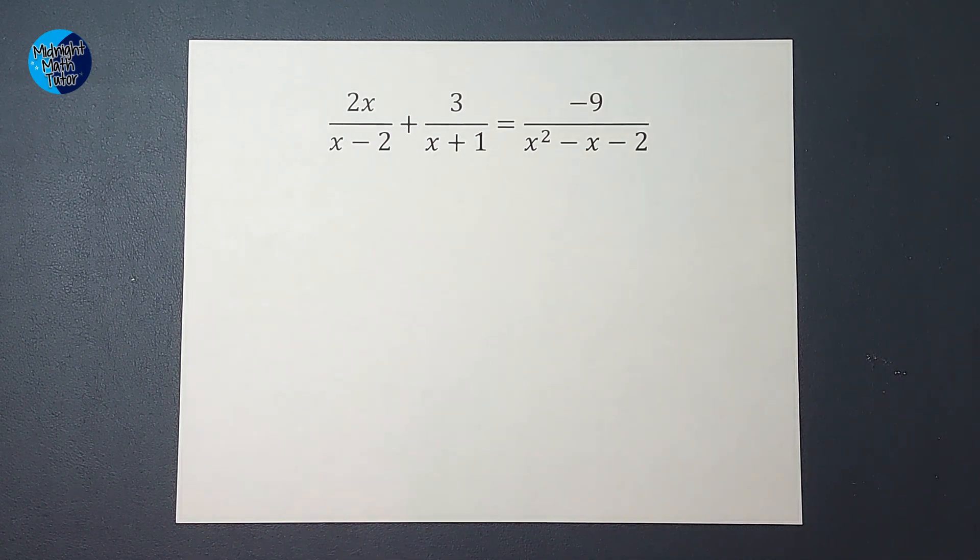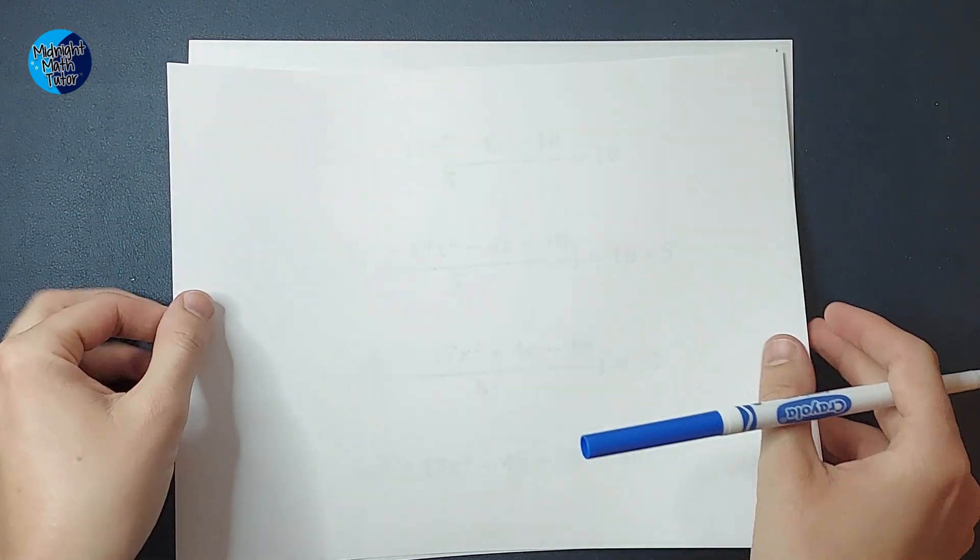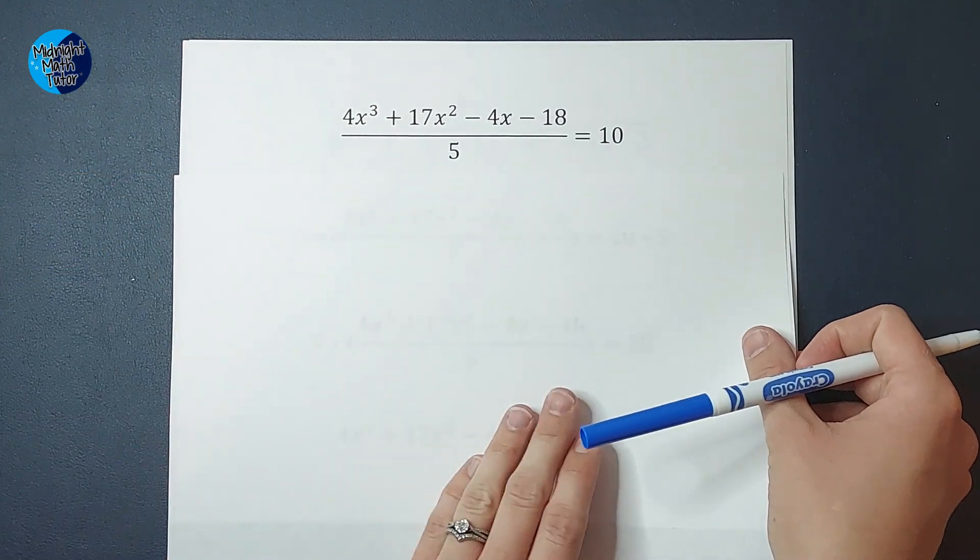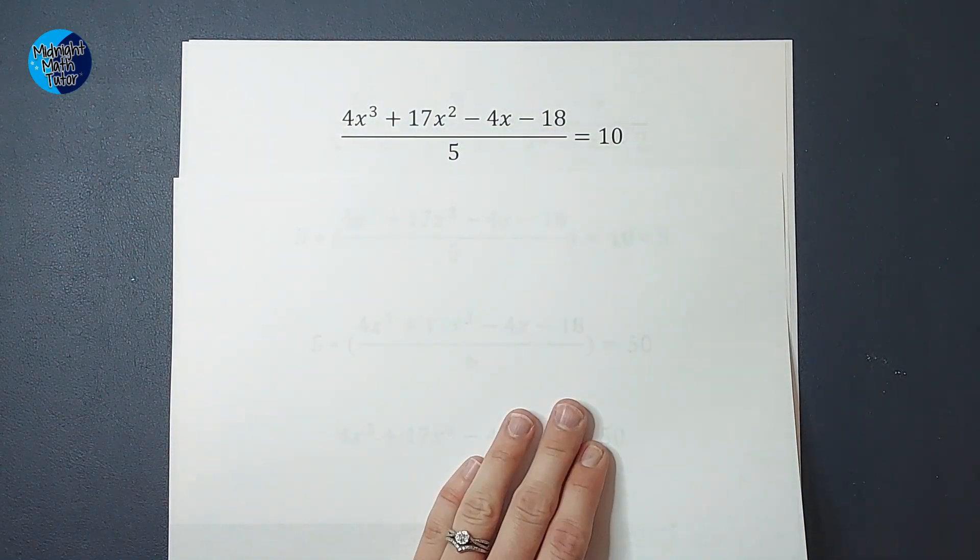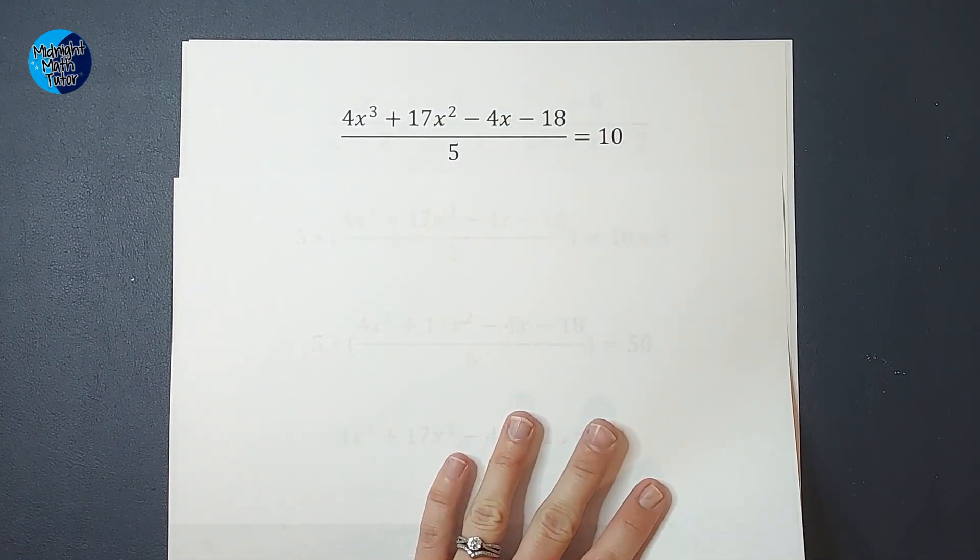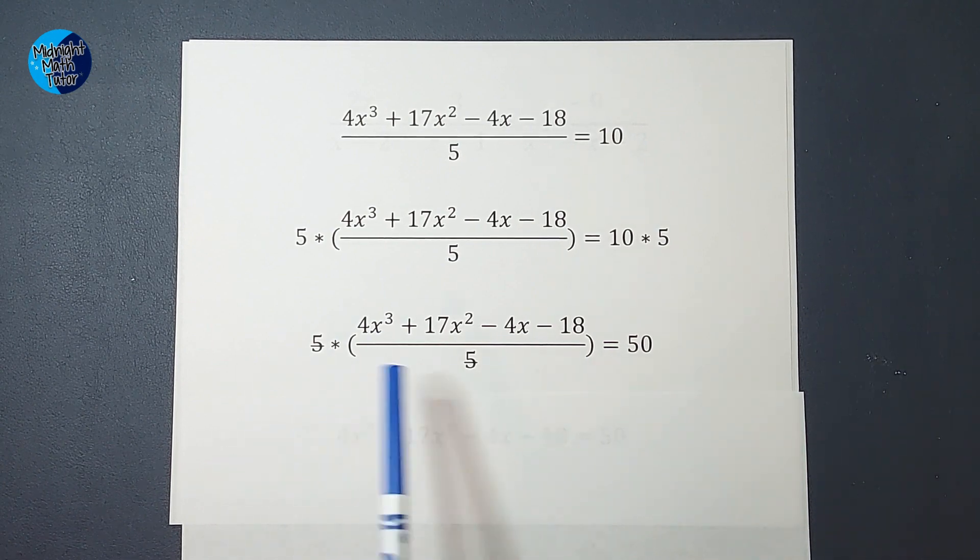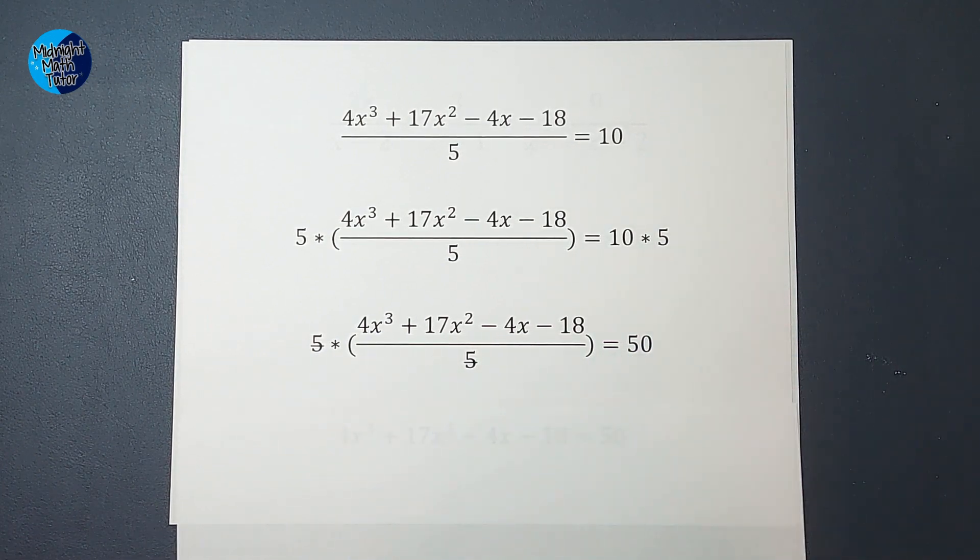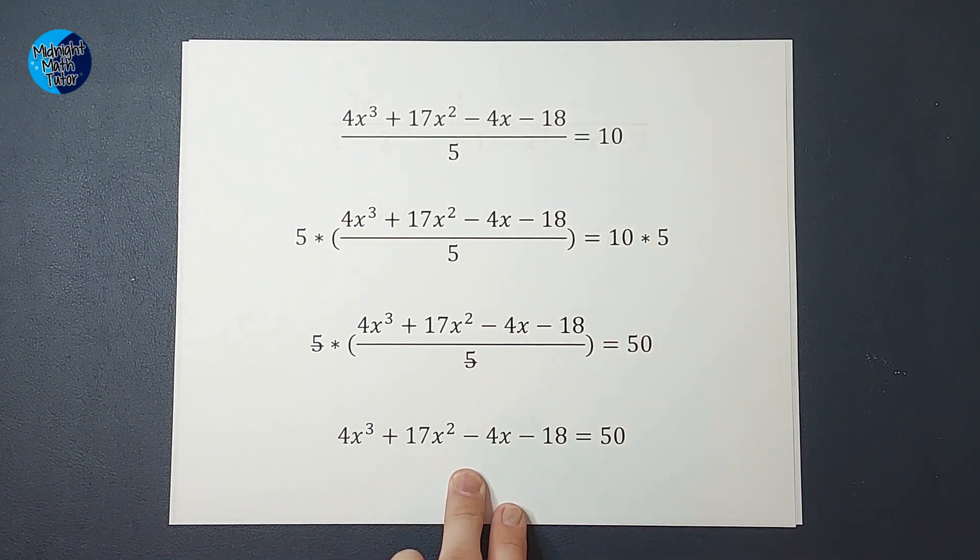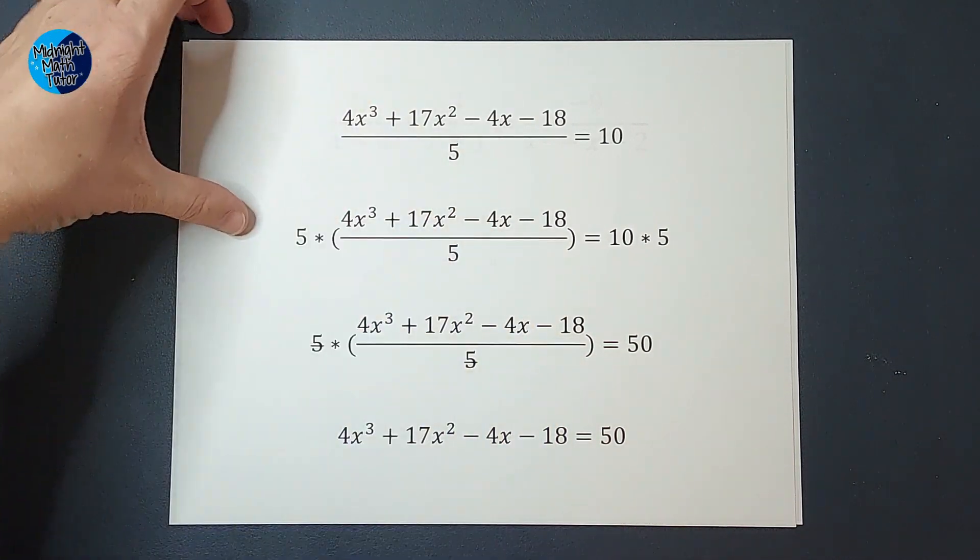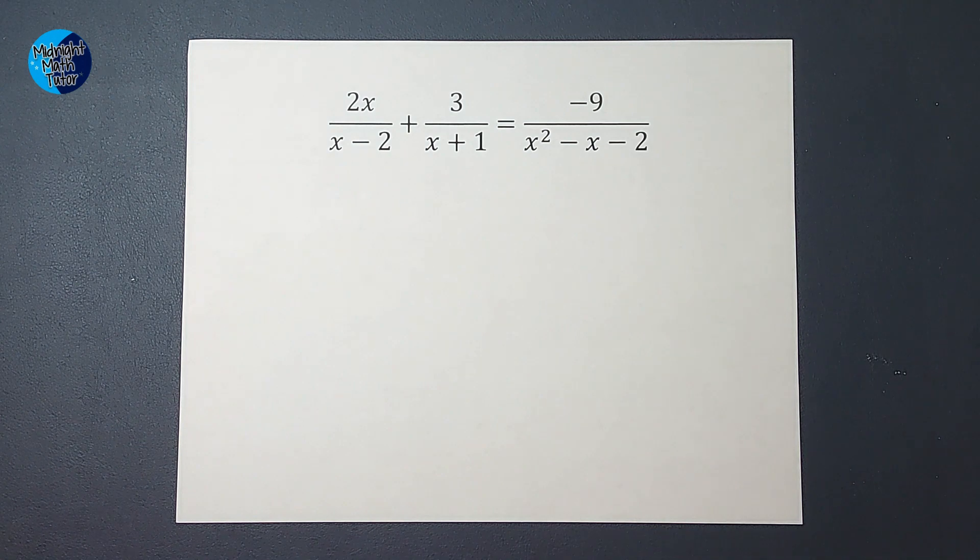Let me show you really fast a different example of what we're doing. So if I had this problem (4x³+17x²-4x-18)/5 = 10, we're not going to actually solve this, but I don't really want to deal with that massive fraction, right? So one strategy with this would be to multiply both sides by 5. And then what happens when I do that is these 5s cancel, this becomes 50, and then I'm solving this instead, which still might look a little intimidating but is a lot better than that guy.